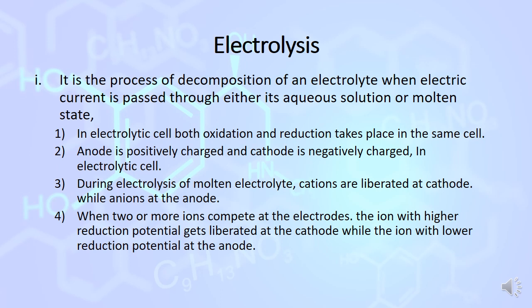Anode is positively charged and cathode is negatively charged. During this process, cations migrate towards cathode and anions migrate towards anode.